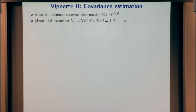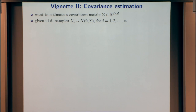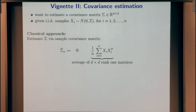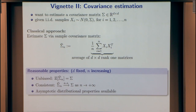Let me give you one other problem before I start delving into specifics. Another standard problem is covariance matrix estimation, which links us to random matrix theory. If I want to estimate a covariance matrix — suppose I have zero-mean Gaussian samples with some covariance — the natural thing is to use the sample covariance matrix, which is the average of these outer products, an average of rank-one matrices. If I do classical analysis fixing dimension and letting n go to infinity, this random matrix will converge to the population covariance in any reasonable metric.